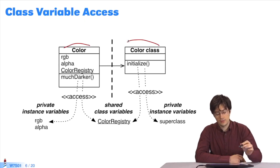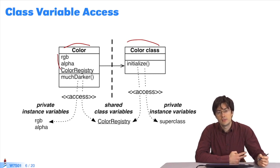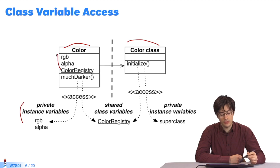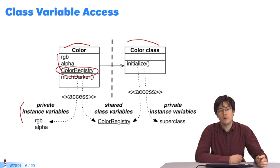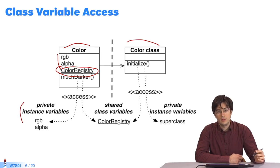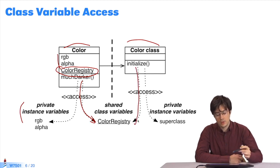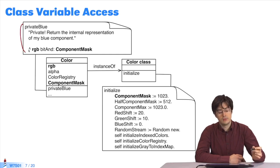Let's go back to our example. Here, we have our color class, which is an instance of the metaclass color class. The color class defines two standard variables, RGB and alpha. These instance variables are private, meaning that they're only accessible using color class methods. It also defines color registry, which is underlined and uses capitals. This indicates that this variable is shared. It's a class variable that is accessible by the methods of the color class and those of the class color class. Here are some examples of uses of this variable. In one instance method, that of private blue in the color class, we access the class variable using its name.